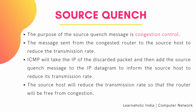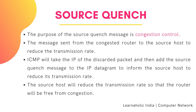The next error type is source quench. The purpose of the source quench message is congestion control. The message is sent from the congested router to the source host to reduce the transmission rate. ICMP will take the IP of the discarded packet and then add the source quench message to the IP datagram to inform the source host to reduce its transmission rate. The source host will reduce the transmission rate so that the router will be free from congestion.